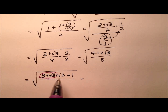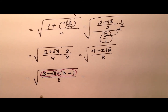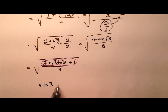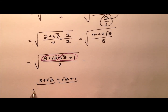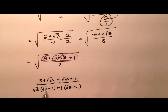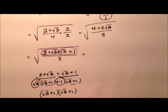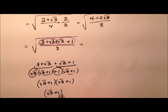I can factor this expression using grouping. Writing it as 3 plus square root of 3, plus square root of 3 plus 1 — factoring the greatest common factor from the first group gives square root of 3, leaving square root of 3 plus 1. The greatest common factor from the second group is 1, also giving square root of 3 plus 1. The leftovers are the same, so we get the square root of 3 plus 1, quantity squared.